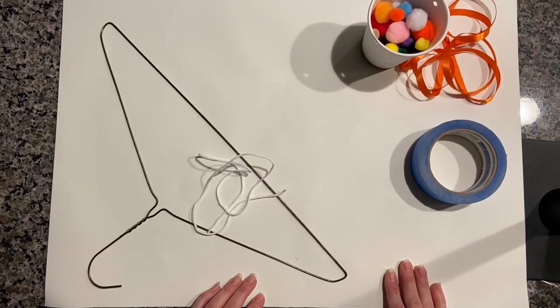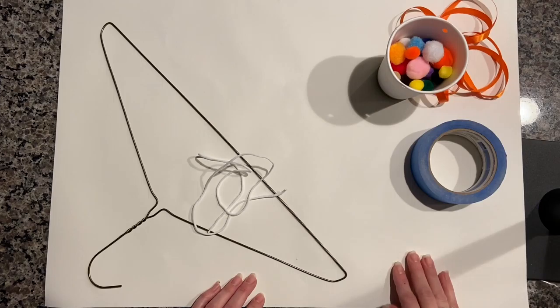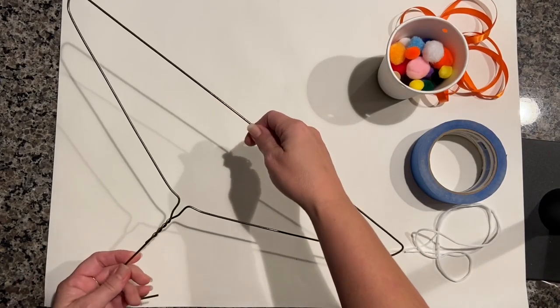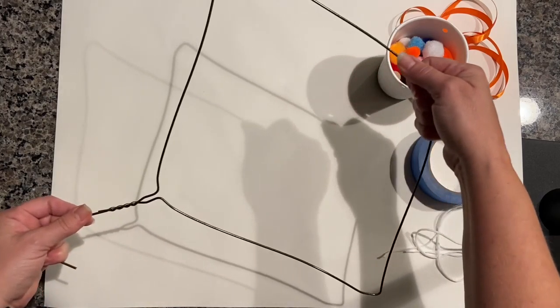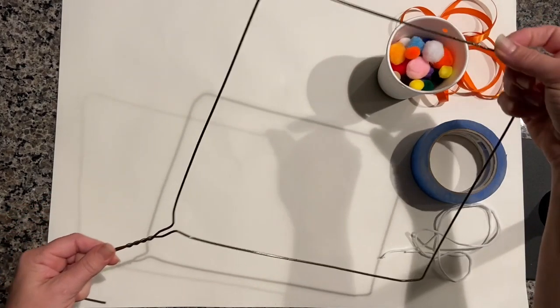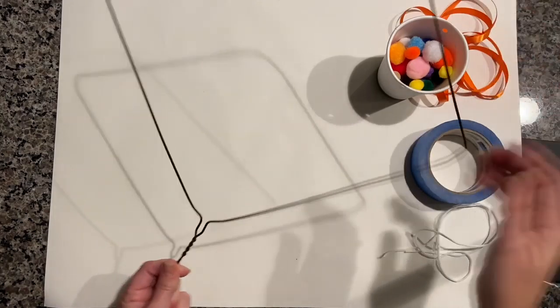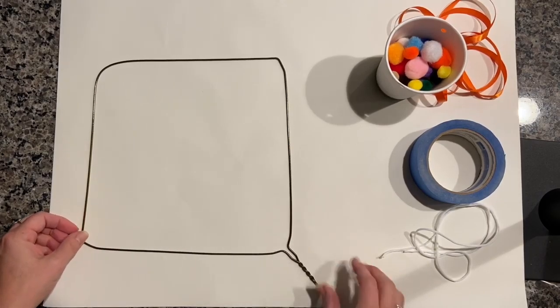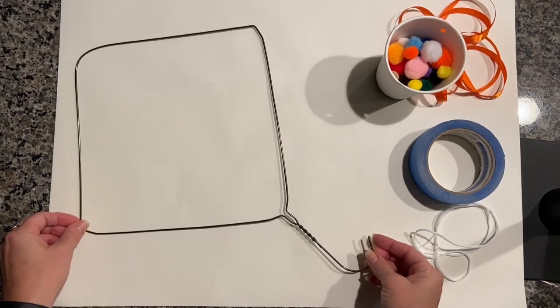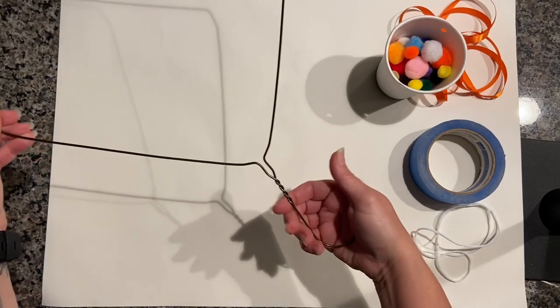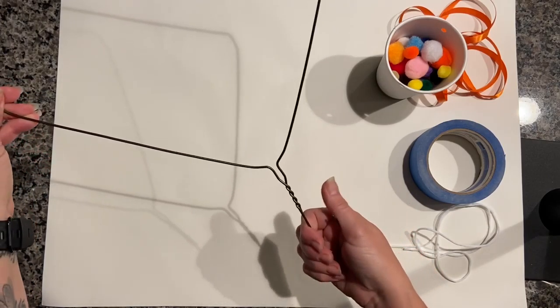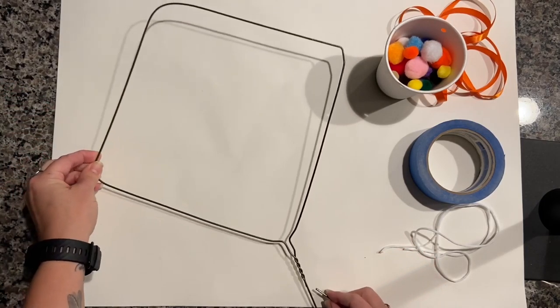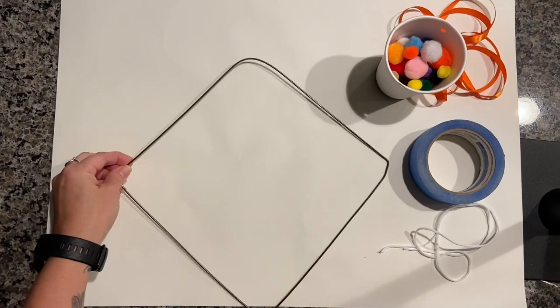Okay, start by picking up your hanger and stretching it out into a diamond or technically a rhombus shape. It should look like a square when you tilt it like this. And to make this a little safer, we are also going to bend in the hook part of the hanger so that it doesn't catch on anything. Just give it a real good squeeze in your fist.